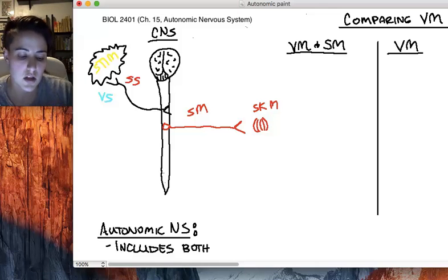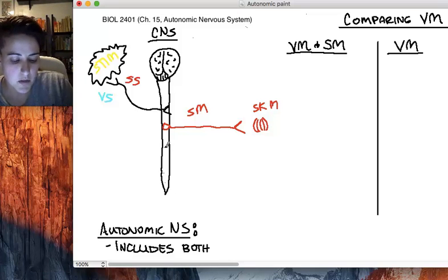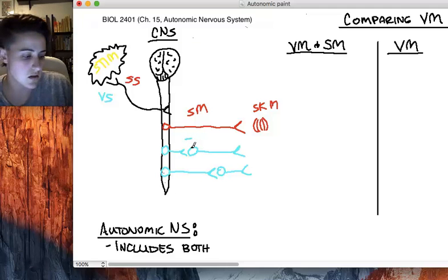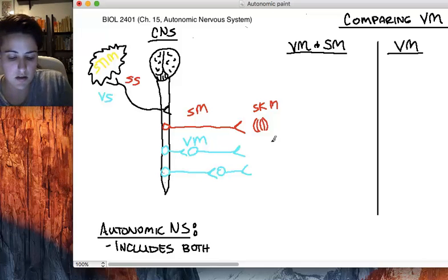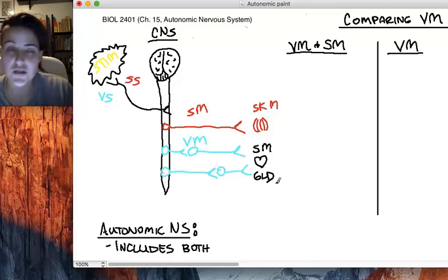But what about visceral motor? We have two flavors of those. Some are short at first and then long. Others are long at first and then short. These are visceral motors. What are those effectors? Remember, these are the involuntary: smooth muscle, cardiac (heart), and glands.